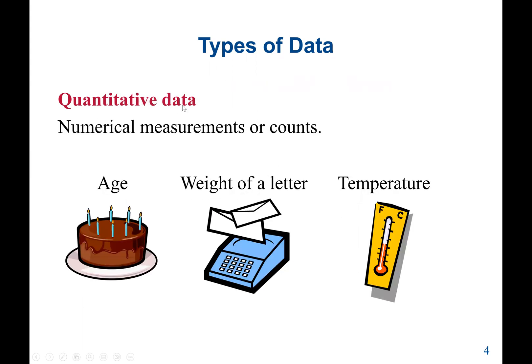Quantitative data is a numerical measurement or count — values based on counting or measurements. Examples can be age, the weight of a letter, or a temperature.